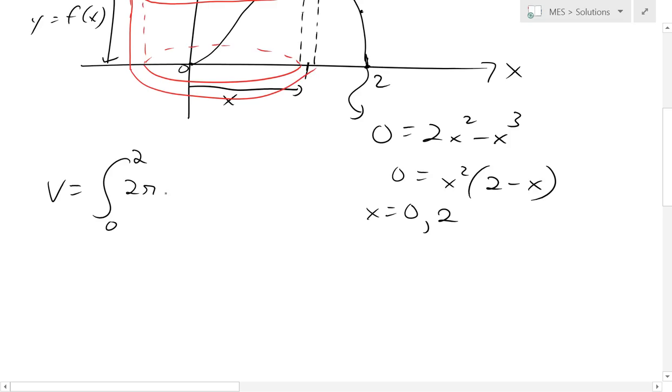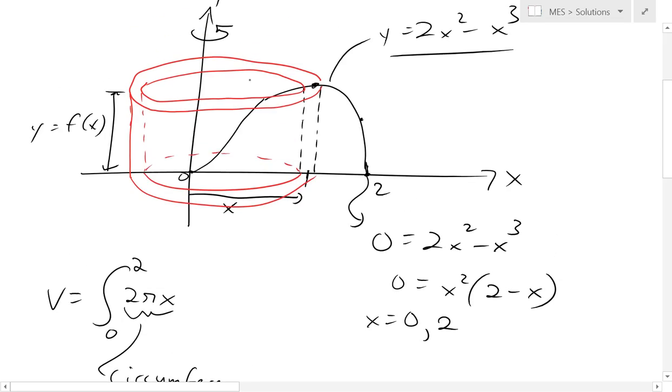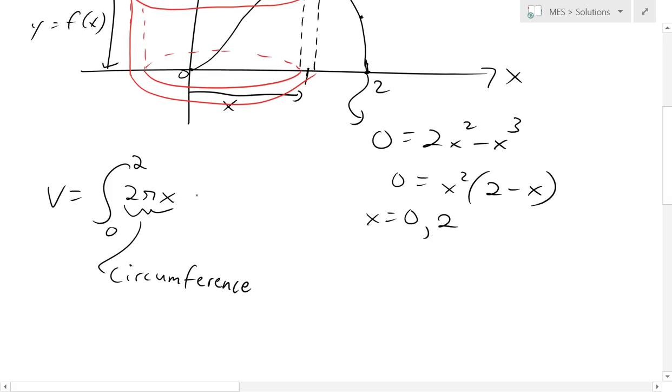So we're going to go from 0 to 2 of now, this is going to be 2 pi x, which is the circumference. So that's circumference of this shell at any point x. So that's this entire circumference around. And now times by the height, f of x.